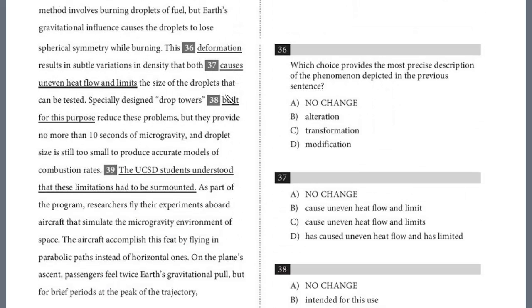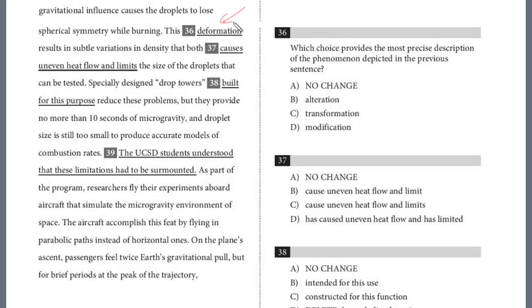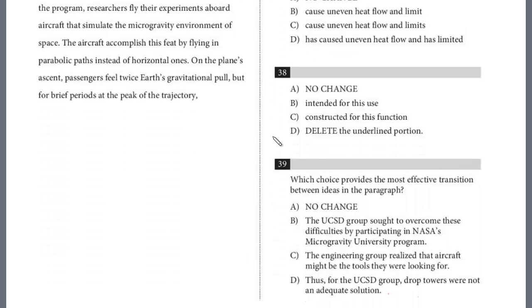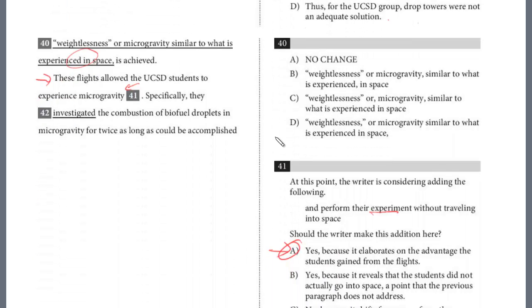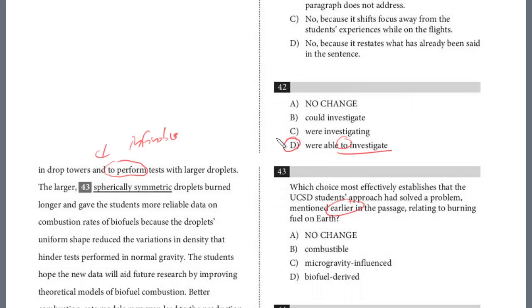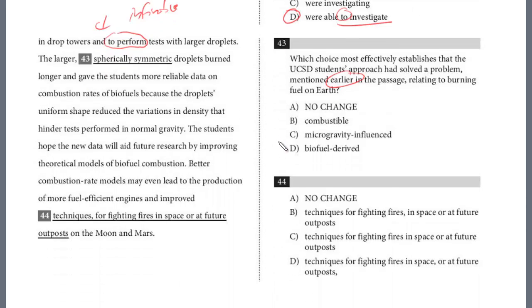So if you recall, we had a diction question at 36 right here, and we chose no change. This deformation results in subtle variations. It was describing how the droplets lost their spherical symmetry. That is the clue that was mentioned earlier. Again, you just have to be careful on these evidence-based questions to look for the clues. And so for 43, spherically symmetric, that definitely was mentioned. And the answer, we're discussing the droplets, is going to be no change for 43.